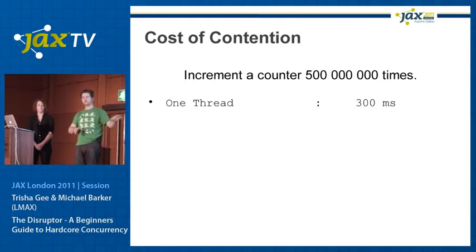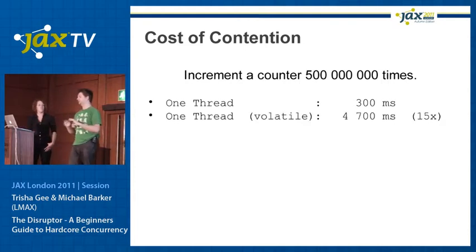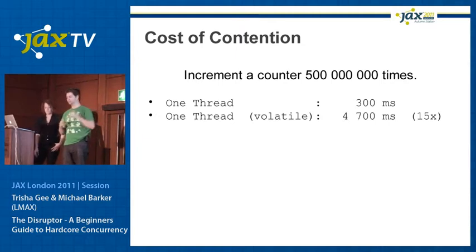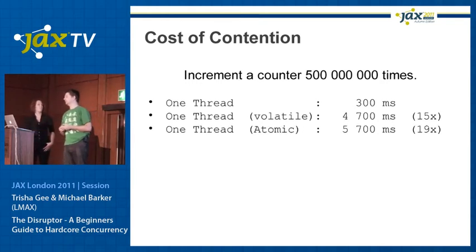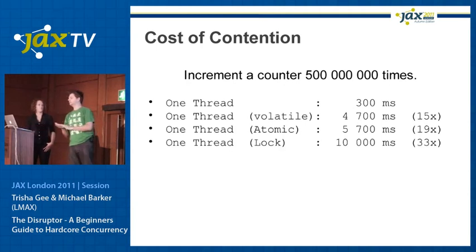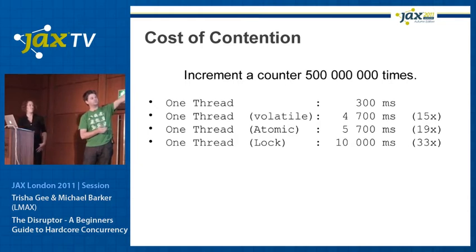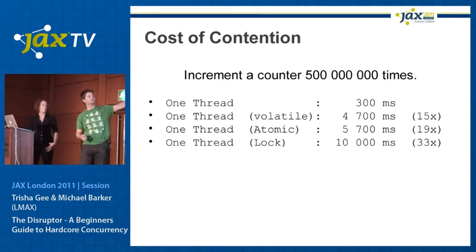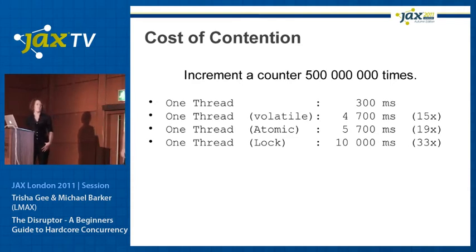With just one thread, no locks and no atomic longs, it takes about 300 milliseconds. If we make that value volatile — still only one thread — it goes up about 15x, and we'll go into the reasons why. With the atomic — using compare-and-increment, still one thread — it's slightly longer than the volatile one. Both of them are effectively issuing a memory barrier, which has a very high cost. In one thread with a lock, it's about 30-odd times slower than no lock at all, but roughly twice the cost of an atomic. When it's uncontended, a lock does essentially one of these atomic operations when it takes the lock and another when it releases.